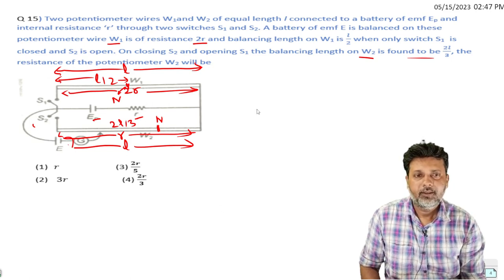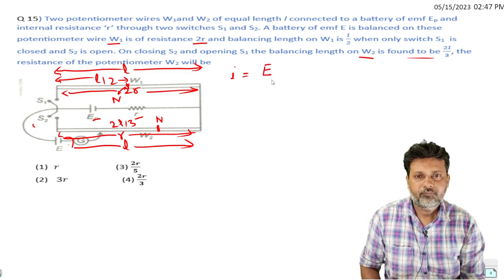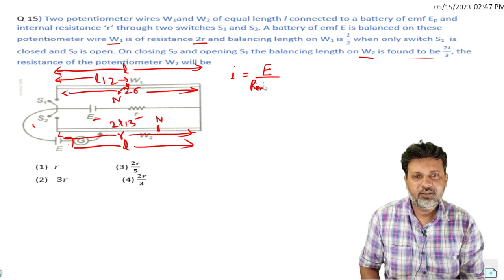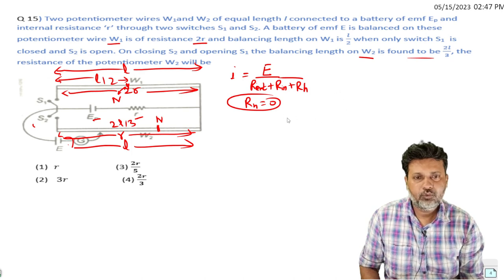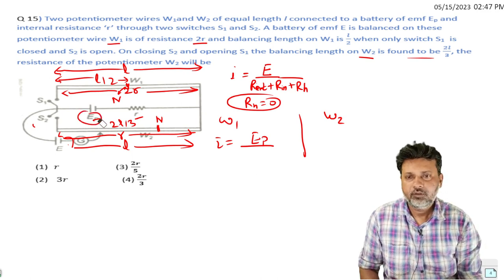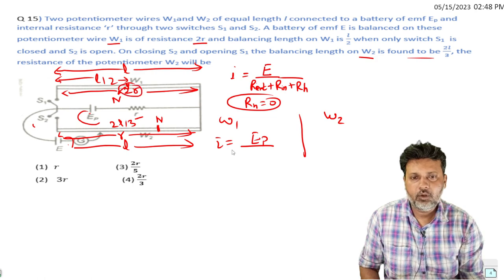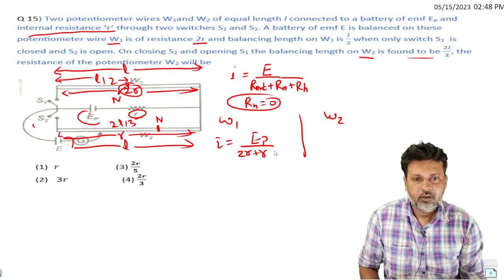The current in the primary circuit is EMF divided by external resistance plus internal resistance plus rheostat resistance. In the first case with only W1 wire, the current I equals E_p divided by external resistance 2r plus internal resistance small r.